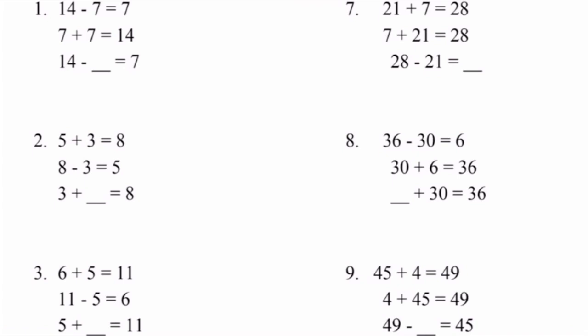Let's go over our first topic: filling out equations. Number one gives us two equations that are actually related to each other. 14 minus 7 equals 7. 7 plus 7 equals 14. These two equations have some kind of relationship, because it indicates how 7 plus 7 equals 14, but also 14 minus 7 equals 7.